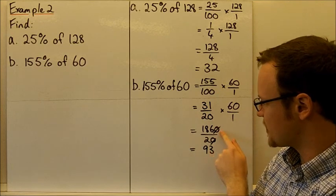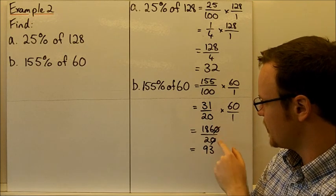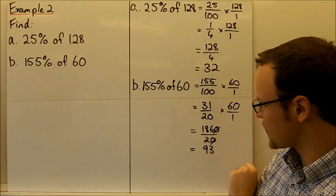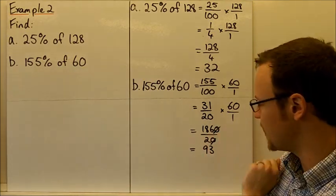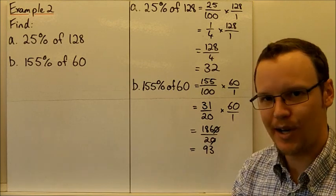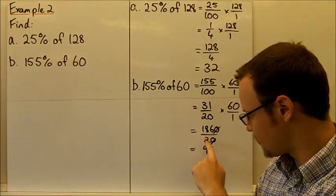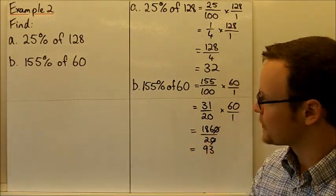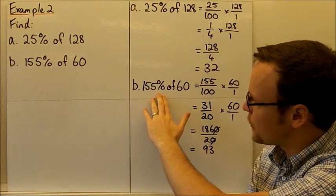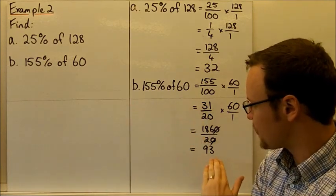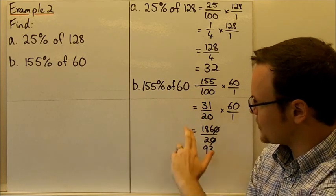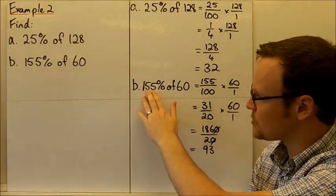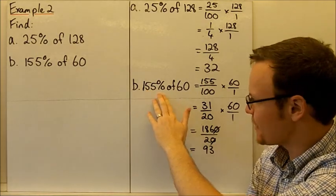31 times 60 is 1,860 divided by 20. Cancelling or dividing both the top and bottom, dividing both the numerator and denominator by 10. And that yields 93. So 186 divided by 2 is 93. So that's the answer we get for 155% of 60 is 93. And you can see that 93 is bigger than 60.